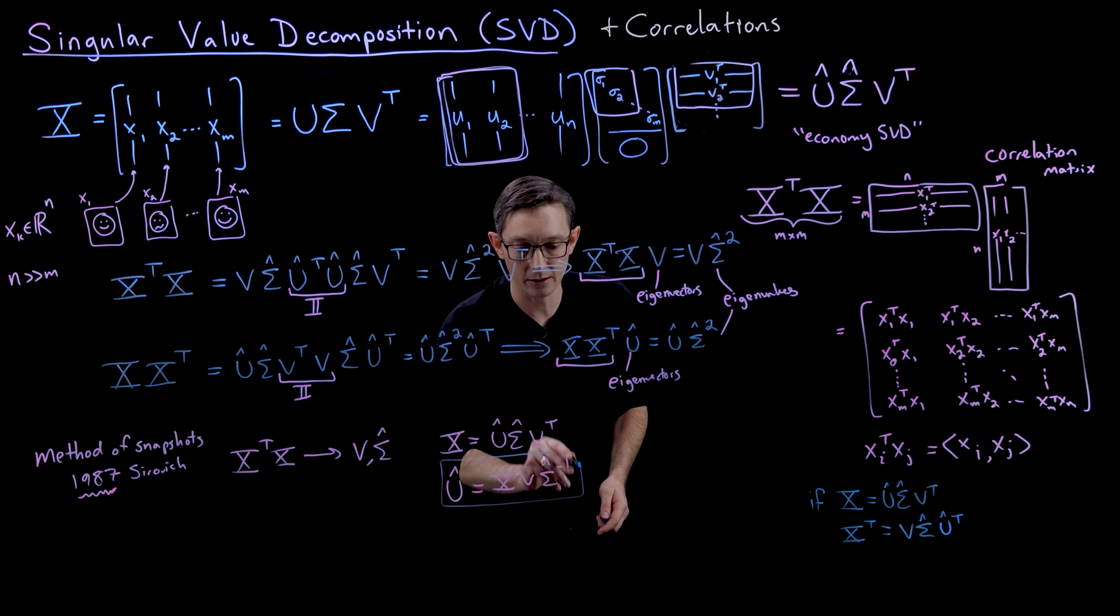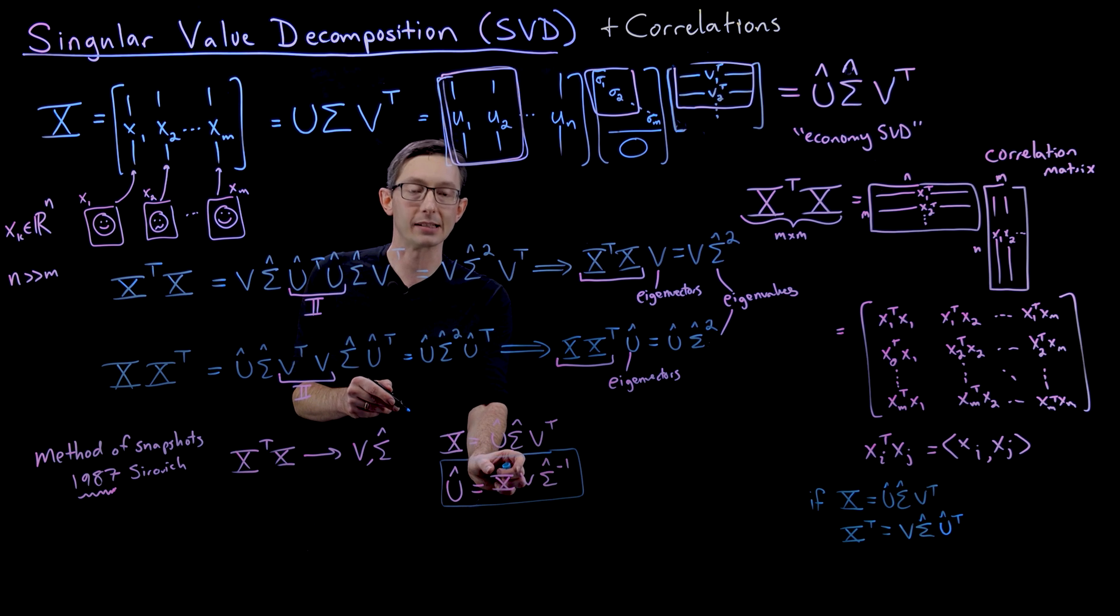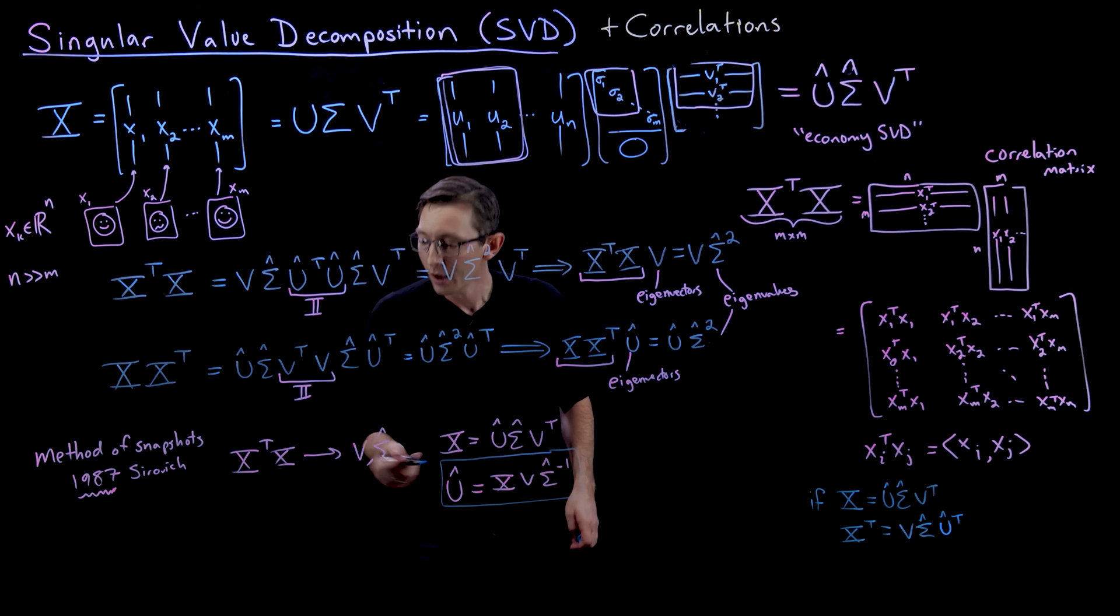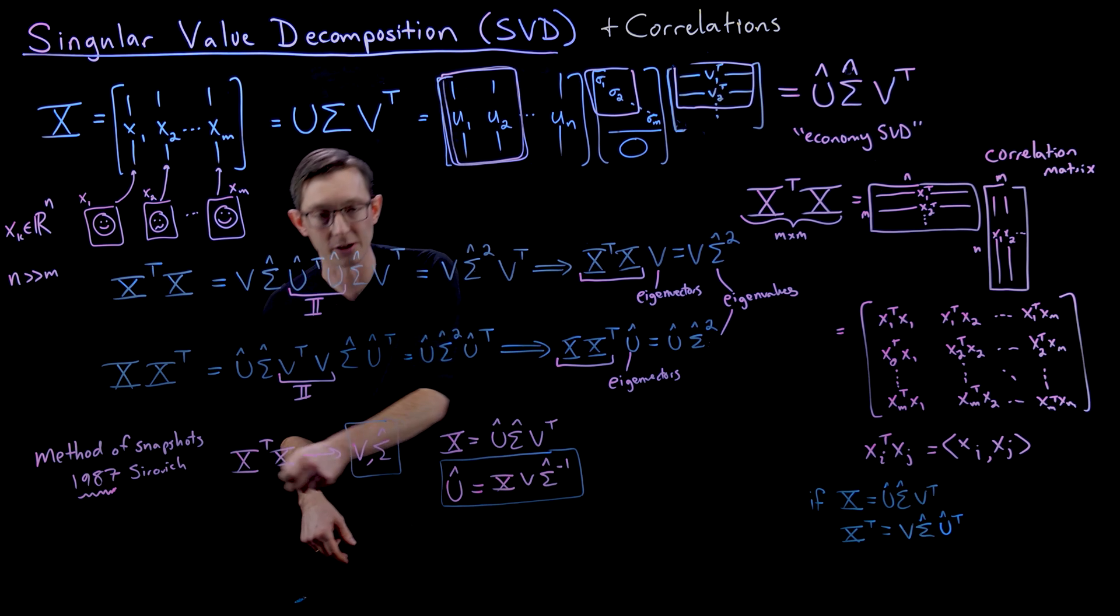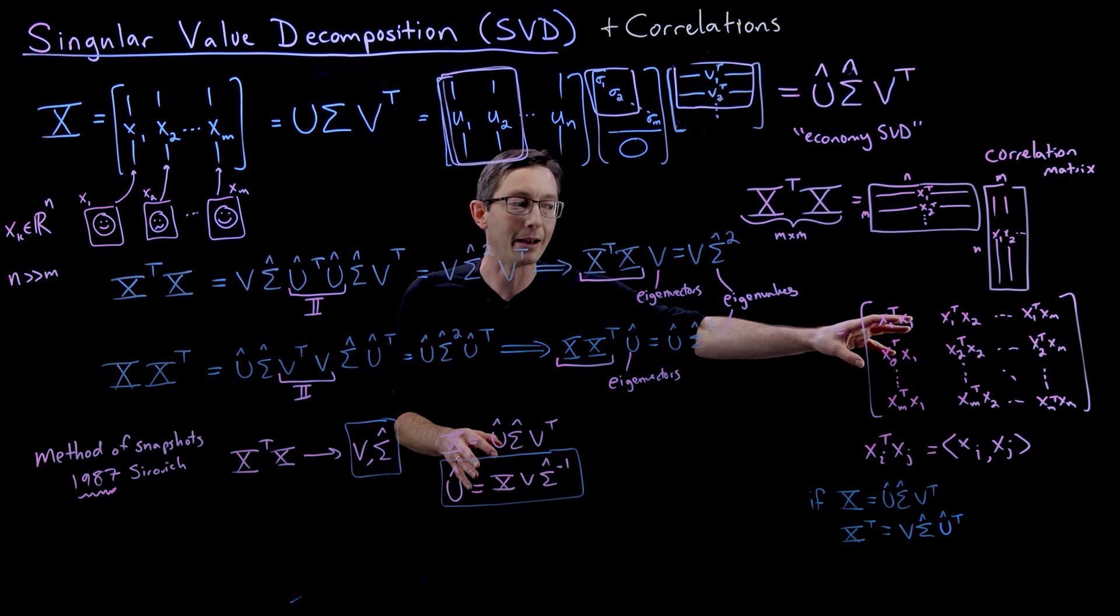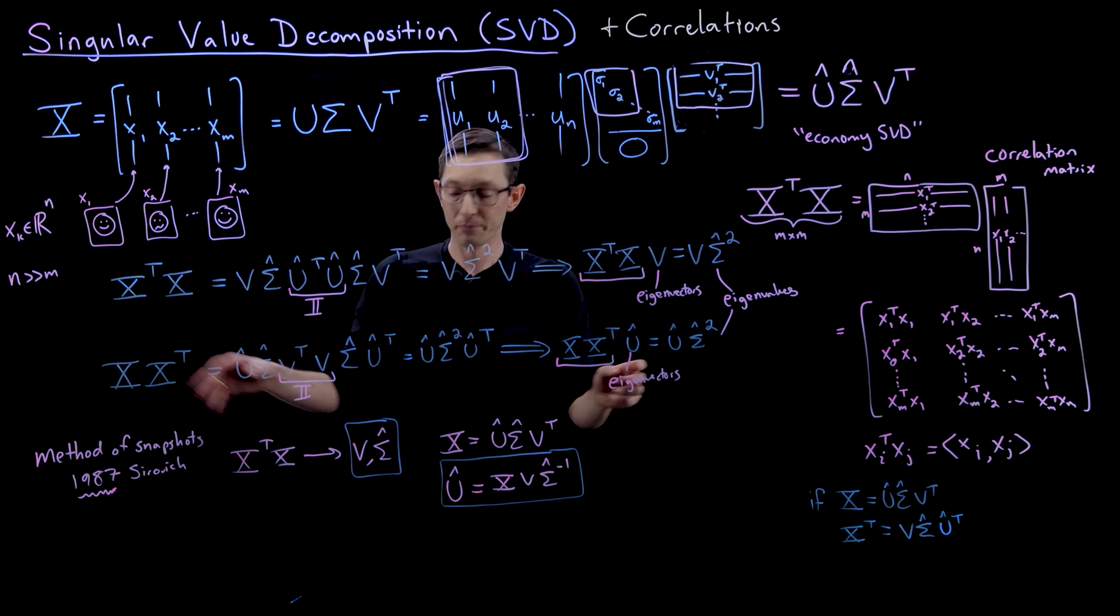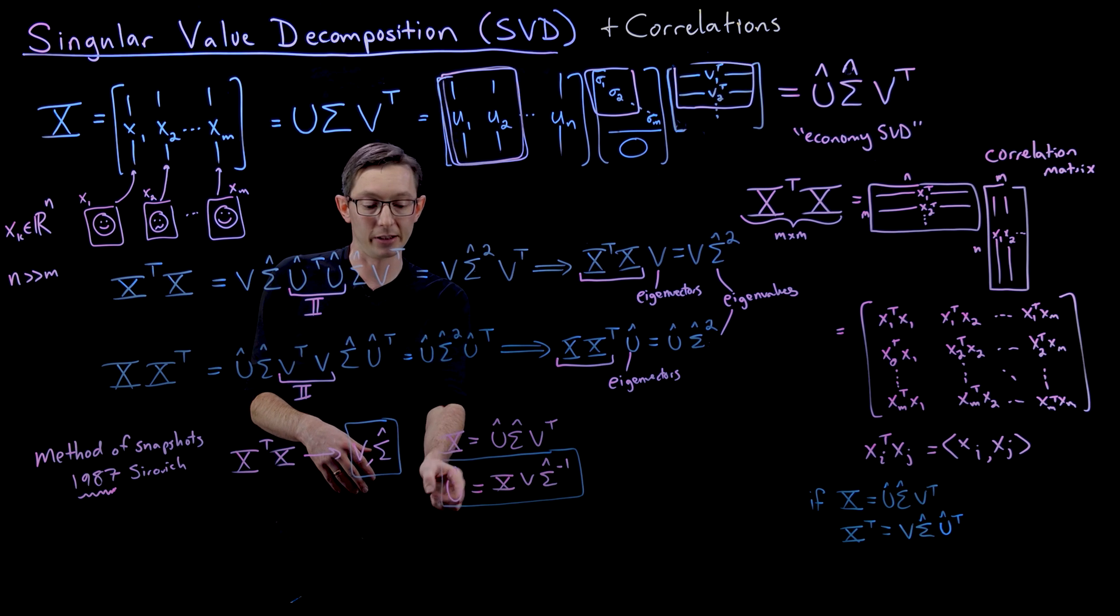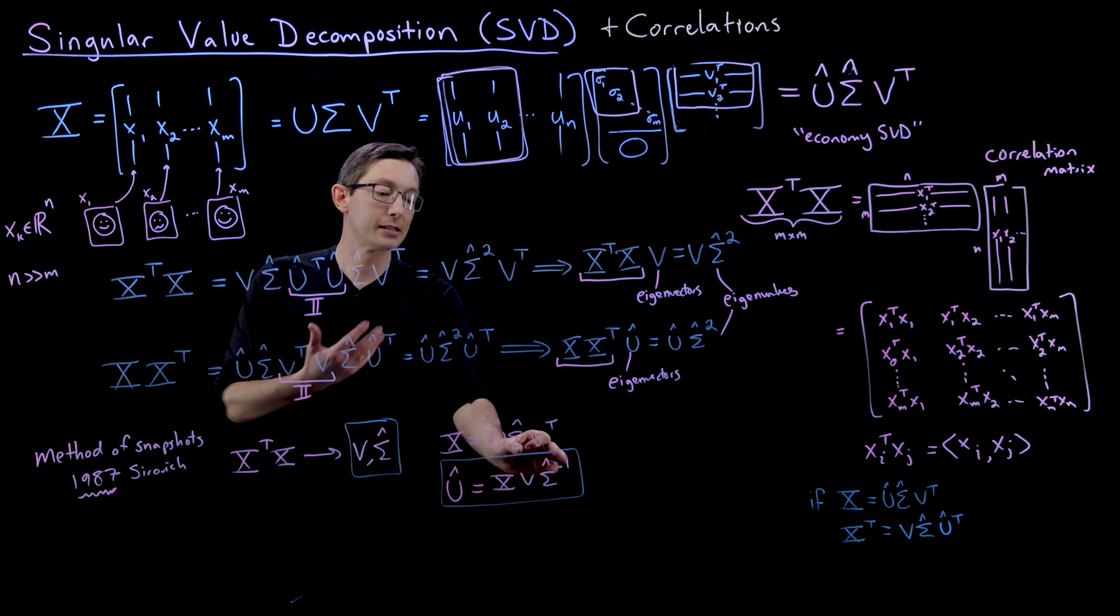You can compute this matrix U hat—again, you can load just pieces of this matrix X at a time and compute this efficiently if this is really big. That's the method of snapshots where you do compute this correlation matrix, the small little m by m. The fact that it has the same eigenvalues as the big one allows you to approximate those left singular vectors, these tall eigenmodes, using your original data matrix and these that you computed from your small correlation matrix.